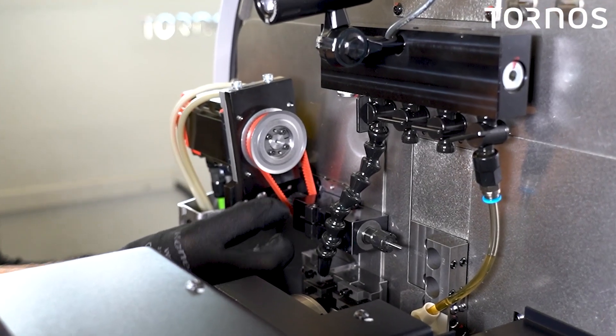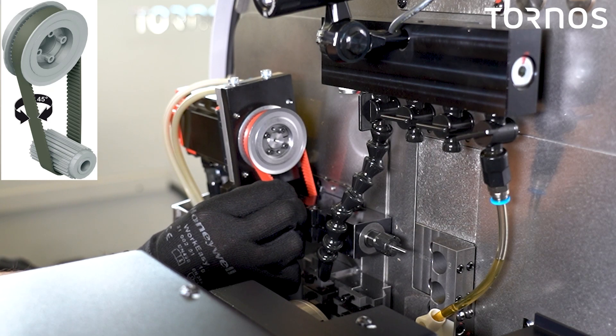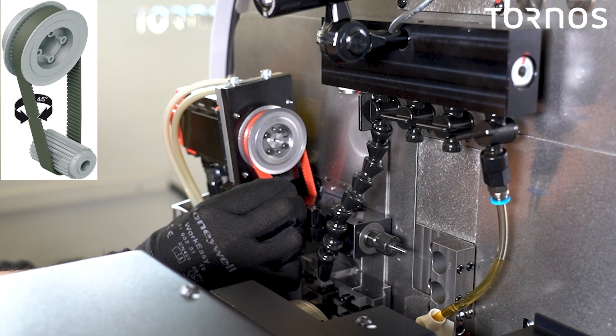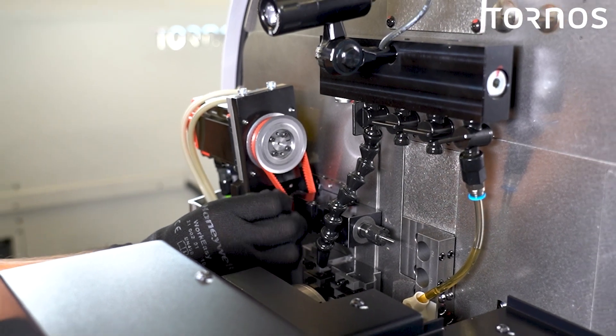Inspect the belt to detect any cracks or damage. And then if it's clean, you can just turn the belt at 45 degrees. If you can manage to turn it more than 45, you will need to readjust the tension.